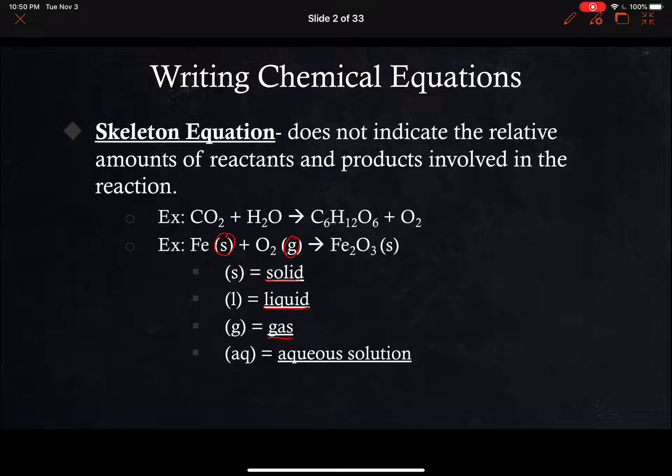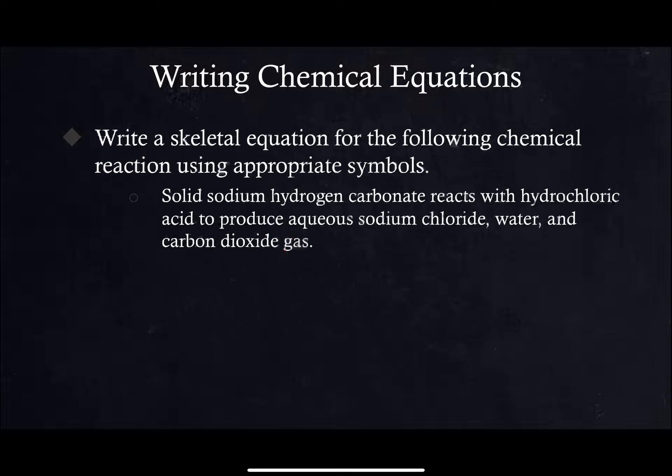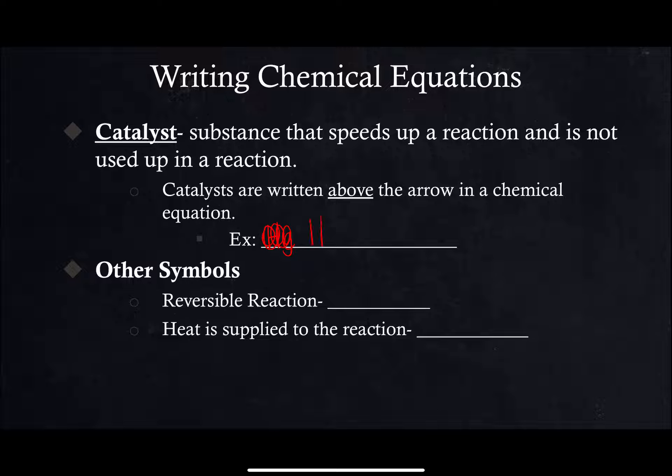When we have chemical equations, a couple of other things that you'll sometimes see is you'll sometimes see a catalyst. Let me write an example here: H2O2, which is peroxide, with manganese oxide yields H2O plus O2. So peroxide breaks down into water and oxygen when this catalyst is present. Sometimes you'll see a catalyst written above the arrow in a chemical equation.